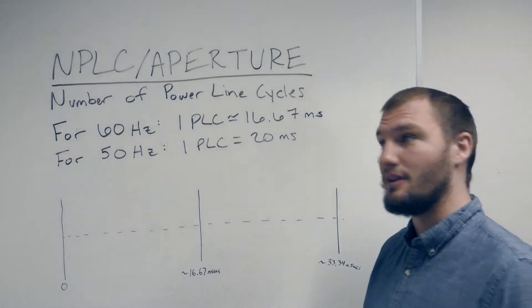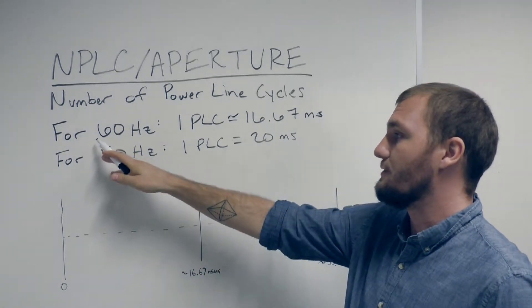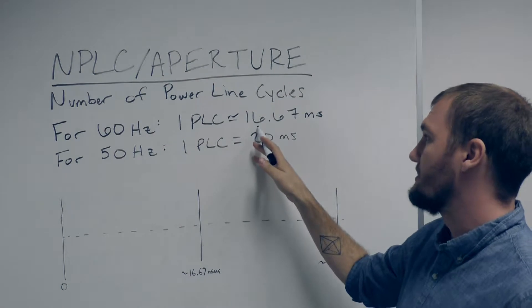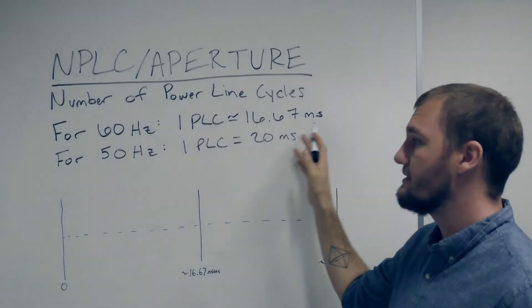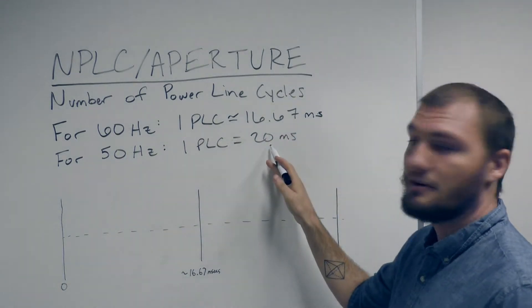This is going to be based on your power line setting. So for 60 Hertz, 1 PLC will equal about 16.67 milliseconds and for 50 Hertz about 20 milliseconds.